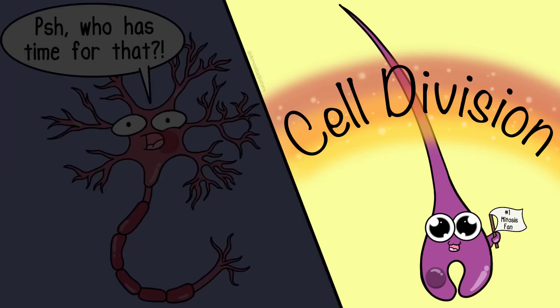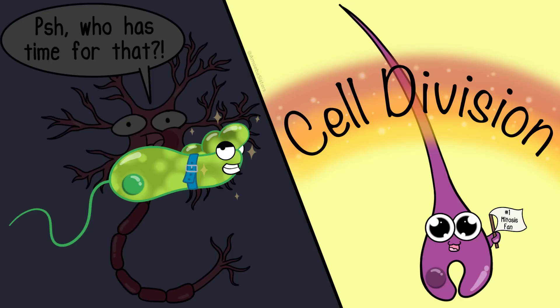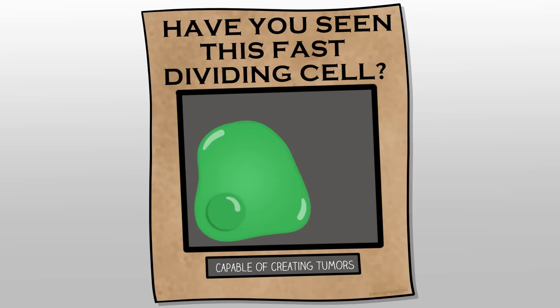For example, your hair follicle cells do mitosis frequently, which is why your hair can grow at the rate that it does. It's also why many cancer drugs may also target hair follicle cells because many cancer drugs go after cells that do cell division frequently.